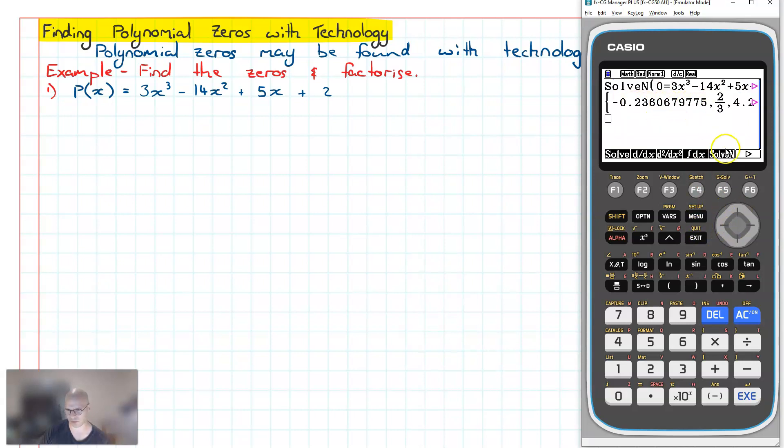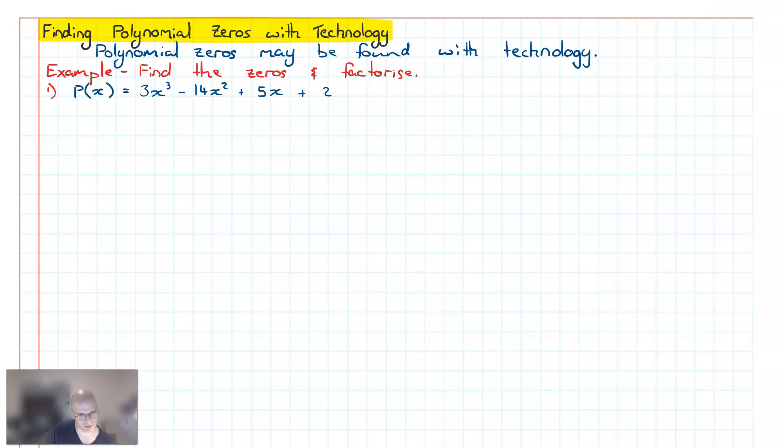And then up here we have our solutions. So we've got the first one looks to be a non-rational number, we'll just ignore that. Second one we have a fraction, so that's clearly rational, and the third one also looks irrational. So what we want to do is we want to use this number over here, this particular zero, to help us find the rest of these. So I can say there is a zero at x = 2/3.